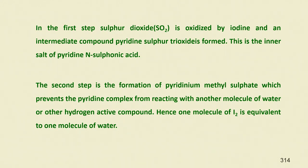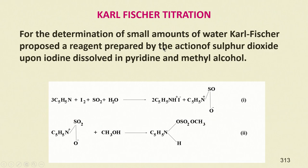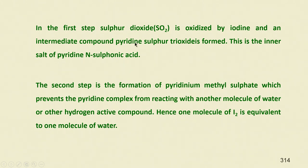In the first step, sulfur dioxide is oxidized by iodine and an intermediate compound — pyridine sulfur trioxide — is formed. This gives C₅H₅NH·SO₃, which is the inner salt of pyridine and sulfuric acid.